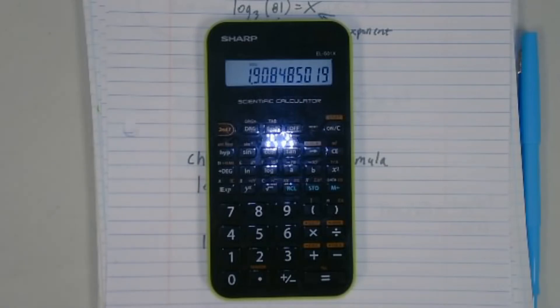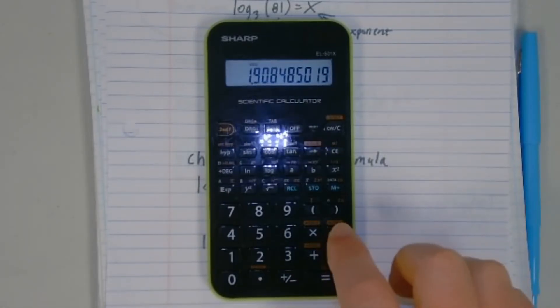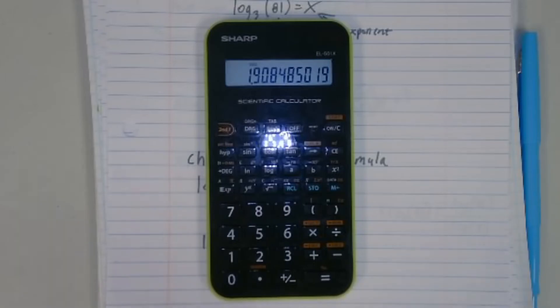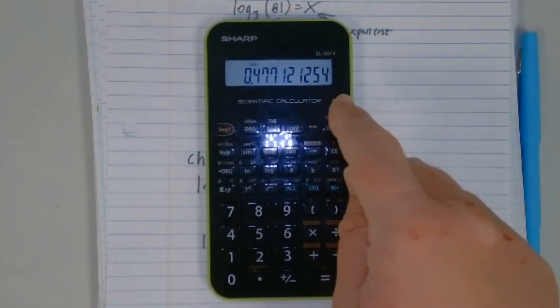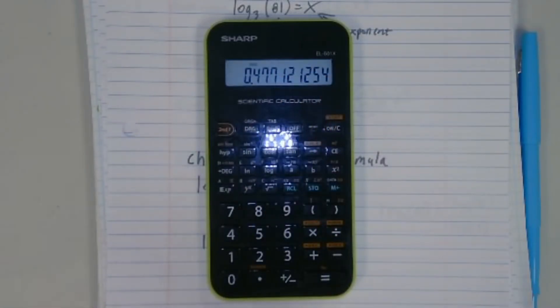So what we're going to do instead is we have to type in the number first. The good news is that it will keep track of what I'm doing and let me process the whole thing. So instead I say 81, take the log of that, it spits out some big number, that's the log base 10 of 81, divided by 3 log, and it spits out the log of 3. And the good news is it has been keeping track this whole time, and when I hit equals, it will give me 4.